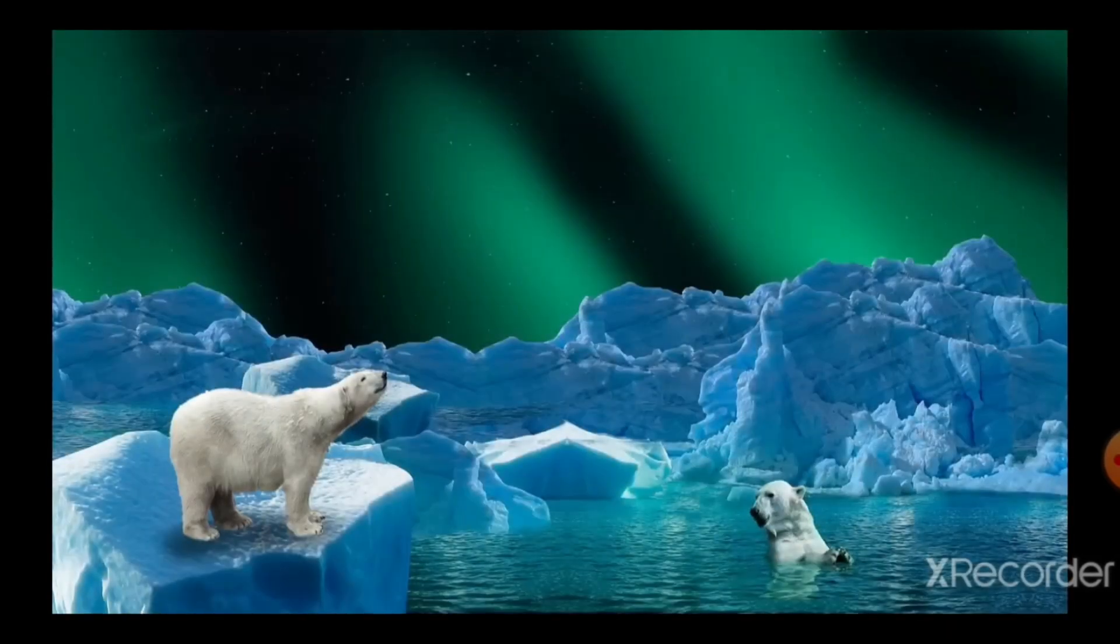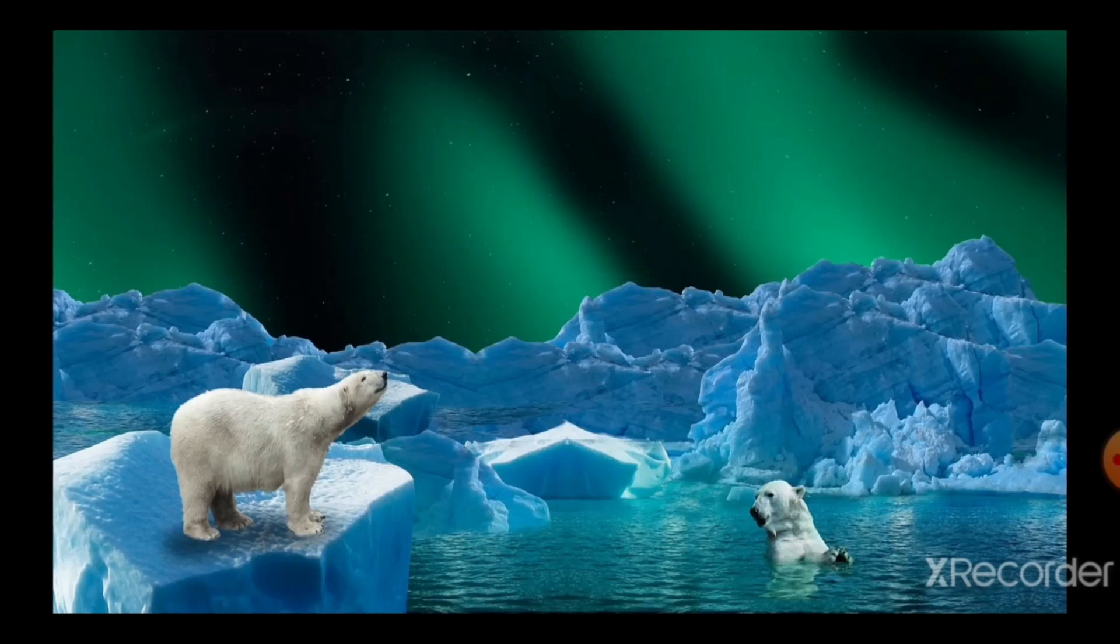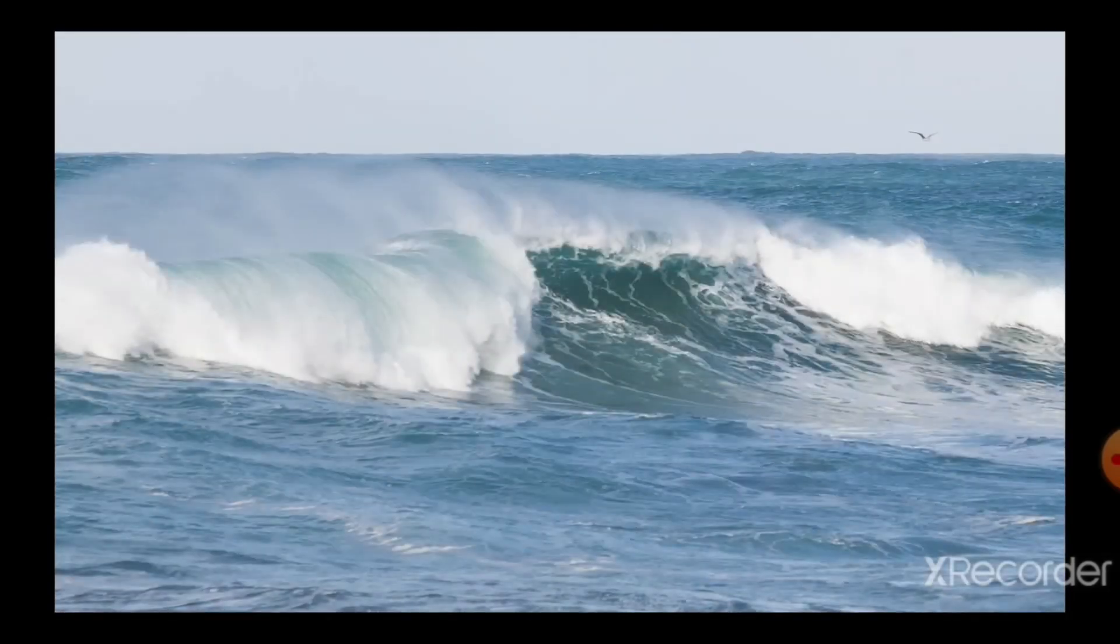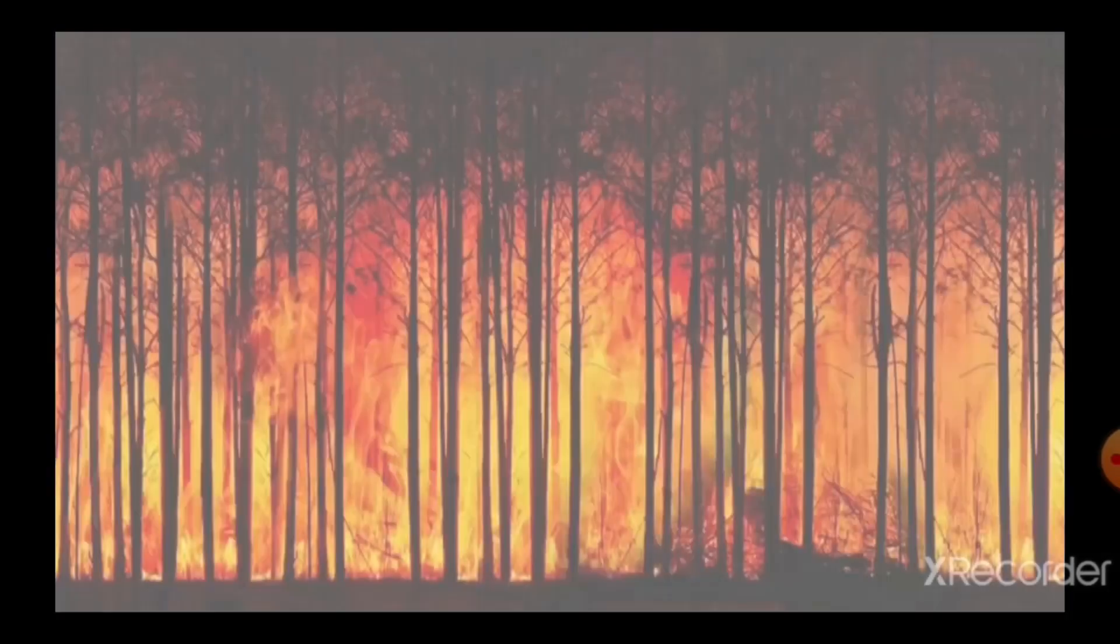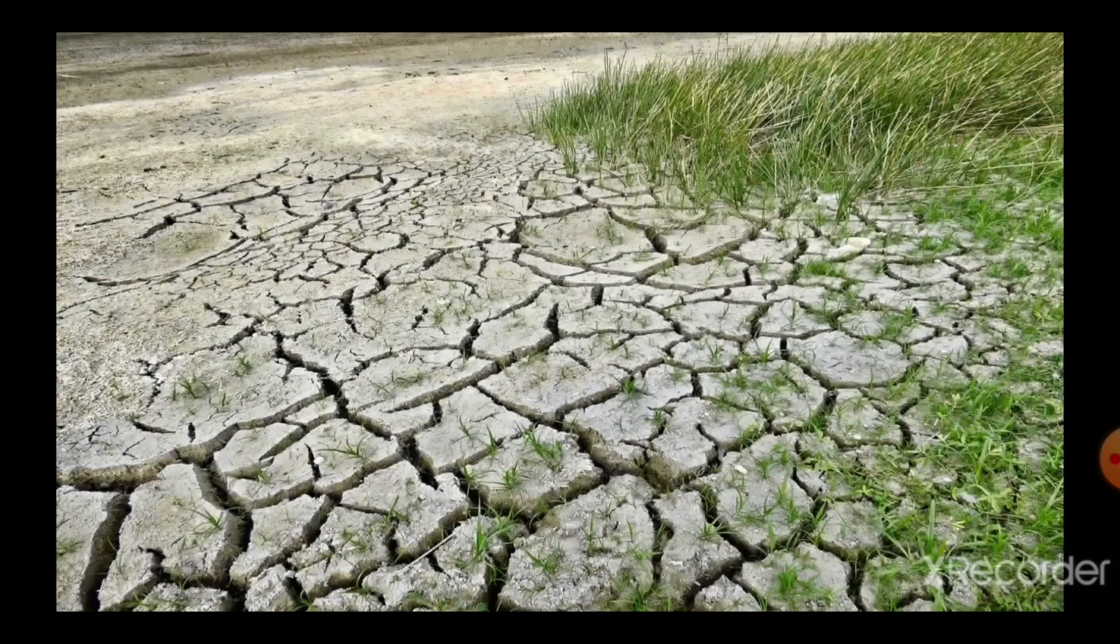Because of this warming, polar ice caps are melting which causes frequent flooding conditions and sea level rise. As the climate is changing, forest fires and droughts are seen frequently. This affects agricultural productivity.